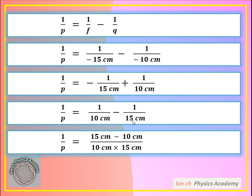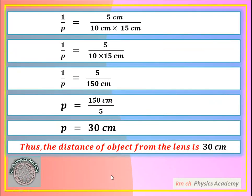So we get 1/10 cm − 1/15 cm. Now we take the LCM of 10 cm and 15 cm, which is 150 cm. Dividing: 15 × 1 = 15, minus 10 × 1 = 10. So we get 15 − 10 = 5 in the numerator. The cm units cancel, giving us 1/p = 5 over (10 × 15) cm.